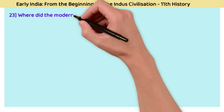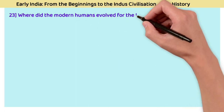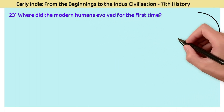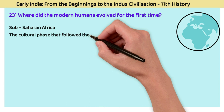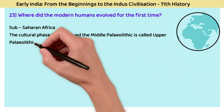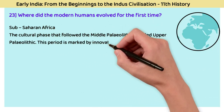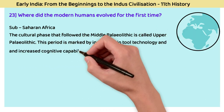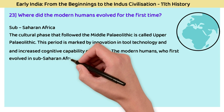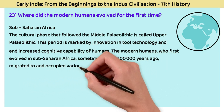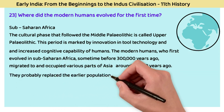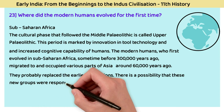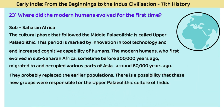Question 23: Where did modern humans evolve for the first time? The answer is sub-Saharan Africa. The cultural phase following the Middle Paleolithic is called the Upper Paleolithic, marked by innovation in tool technology and increased cognitive capability. Modern humans first evolved in sub-Saharan Africa sometime before 3 lakh years ago, then migrated to various parts of Asia around 60,000 years ago. They probably replaced earlier populations and may have been responsible for India's Upper Paleolithic culture.